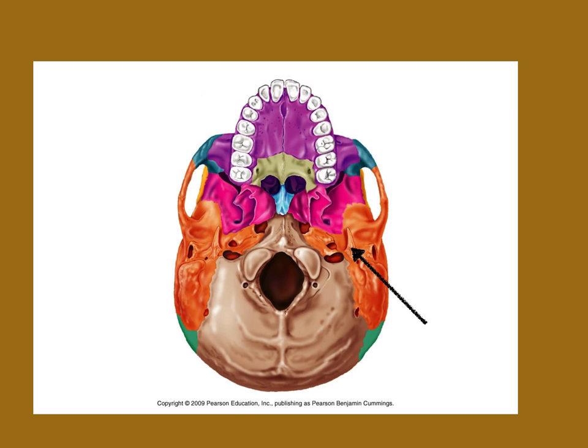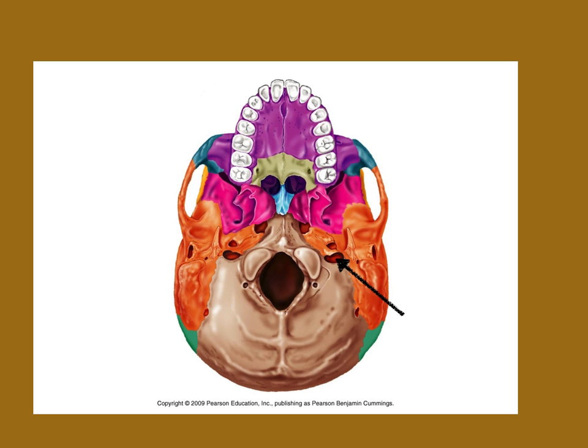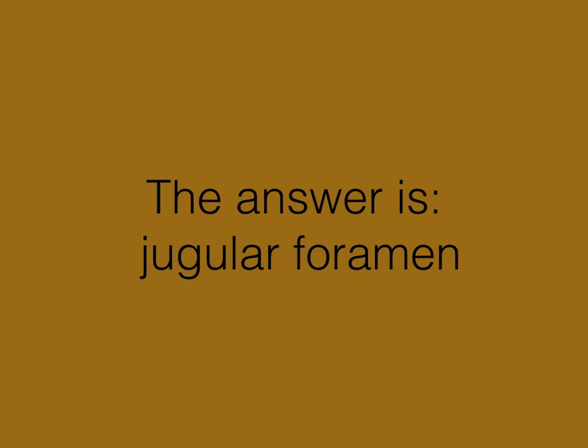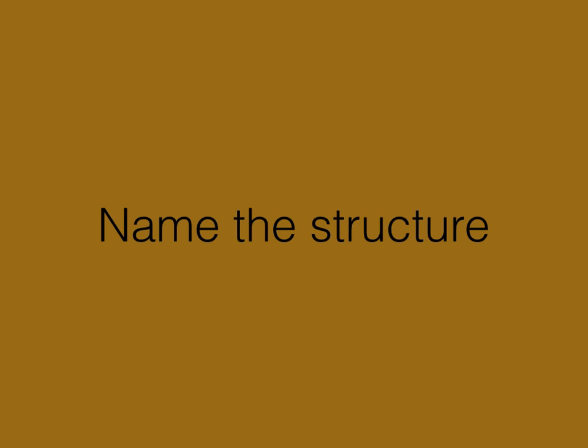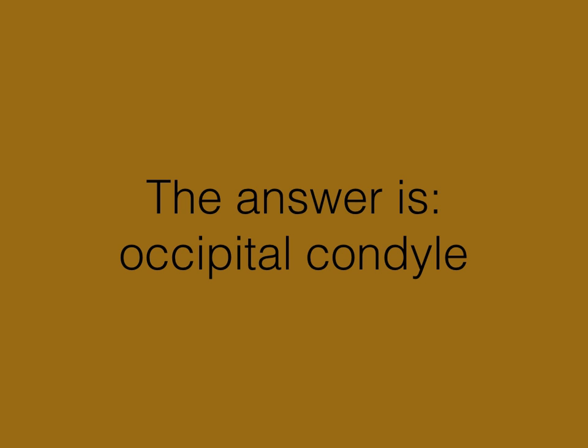You've seen this already — it's that little spike coming off the temporal bone. That is the styloid process. This opening is called the jugular foramen.